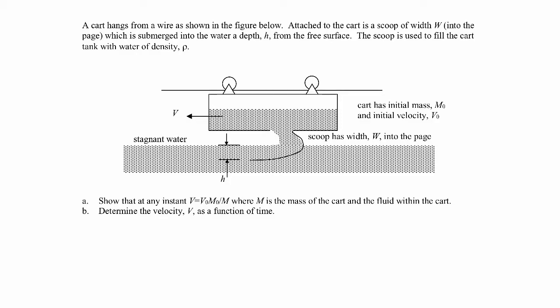In this example, we have a cart hanging from a wire. Attached to the cart is a scoop of width w into the page, which is submerged into the water at some depth h from the free surface. The scoop is used to fill the cart with water of density rho. The cart has some initial mass m₀, some initial velocity v₀, headed off to the left, and the water is stagnant.